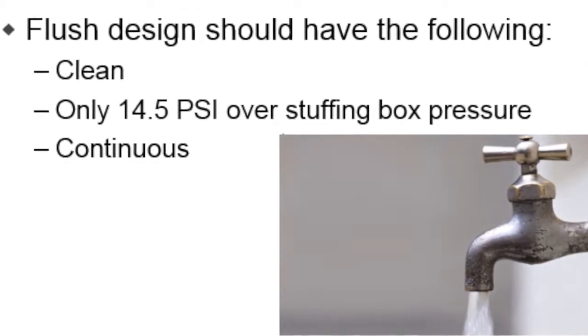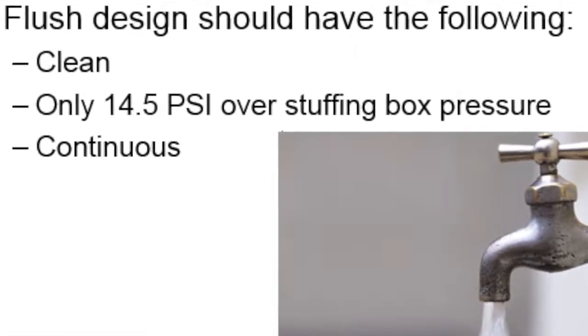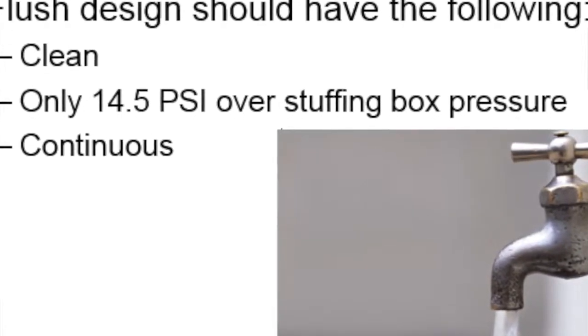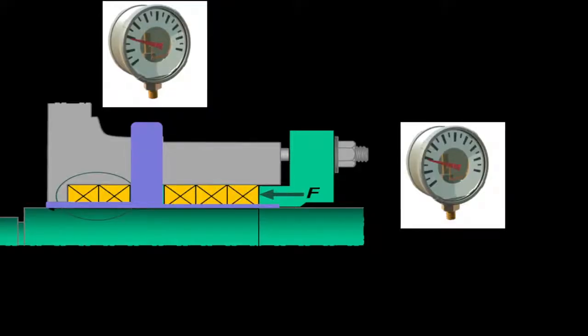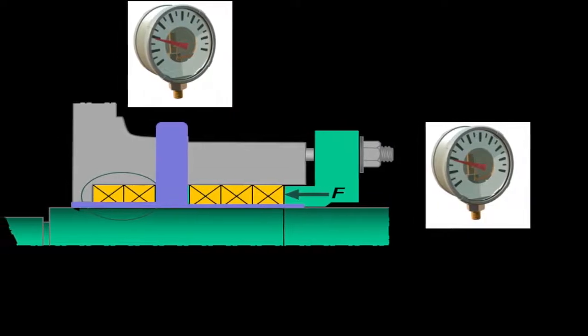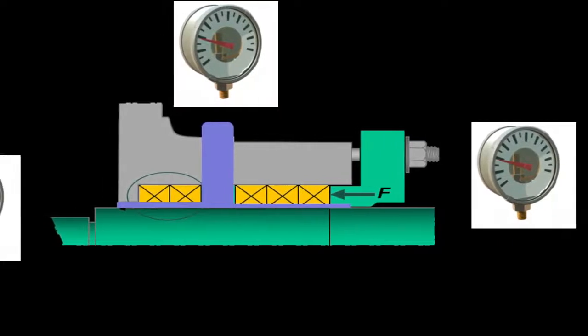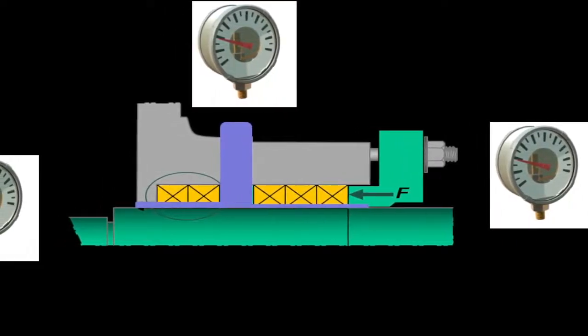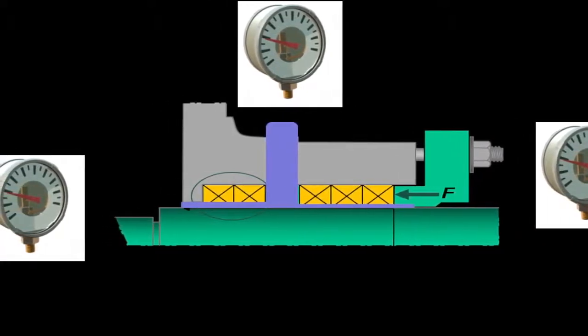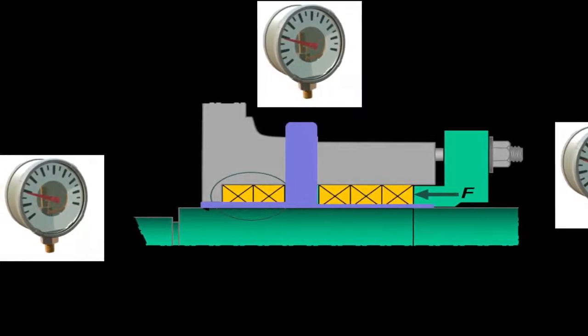For barrier fluid to work it needs to always have higher pressure than the stuffing box. This is very important since sometimes the pressure of the flush is inconsistent resulting in reversing the flow. Pressure of a flush should be set to one bar, about 14 psi, above the stuffing box pressure. The flush pressure becomes the new pressure in the packing so if the flush pressure is considerably higher than one bar over stuffing box pressure, more force will be used to create a seal in the packing resulting in shorter packing life.